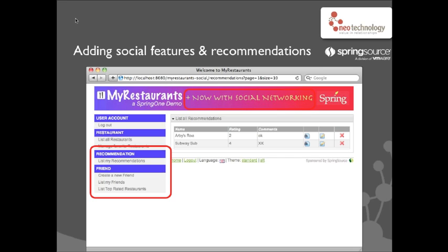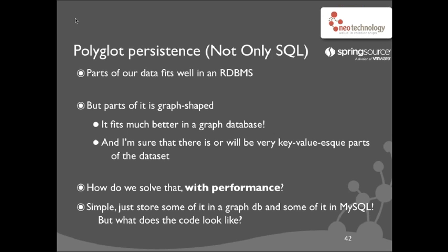It ends up in the same kind of performance hole I showed before with MySQL a couple of slides back. So what you actually want to do is take the data we just added — which is all graphy — and put that in a graph database while the rest of your application remains intact. This is called polyglot persistence. I think this is going to be an increasingly important part of the average enterprise developer's life: look at your existing data set, figure out parts that fit well in a relational database, see other parts that don't, and find the more optimized storage for them. In this case, we have a lot of graphy data, so let's put that where it shines — in a graph database.